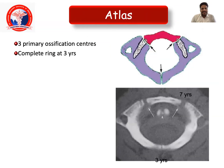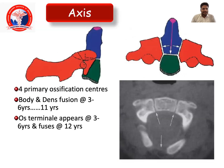The atlas is the first bone of the cervical spine where three primary ossification centers are seen, forming a ring that will be completely ossified at 3 years of age. The axis has four primary ossification centers: the body and dens fuse at 3, 6, and 11 years. The os terminale appears at 3 years and fuses at 12 years.